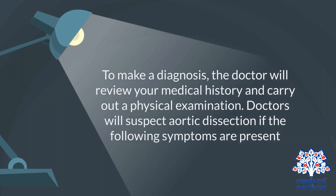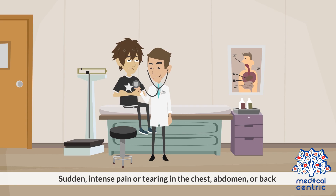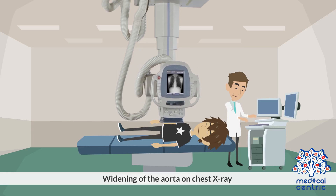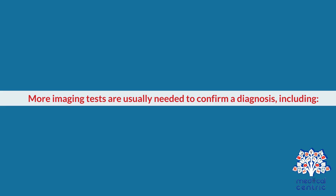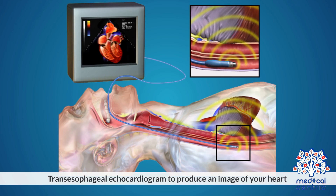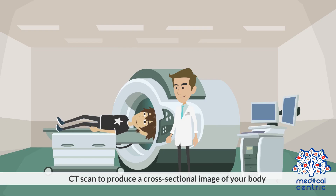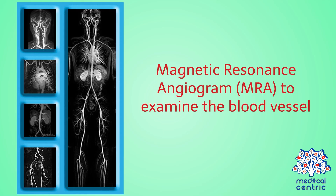To make a diagnosis, the doctor will review your medical history and carry out a physical examination. Doctors will suspect aortic dissection if the following symptoms are present: sudden intense pain or tearing in the chest, abdomen, or back; widening of the aorta on chest x-ray; and differences in blood pressure between the left and right arms. More imaging tests are usually needed to confirm a diagnosis, including a transesophageal echocardiogram to produce an image of the heart, a CT scan to produce a cross-sectional image of the body, and a magnetic resonance angiogram, or MRA, to examine the blood vessel.